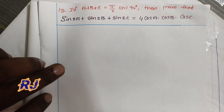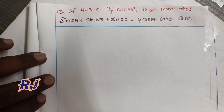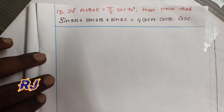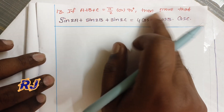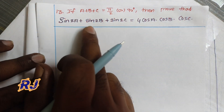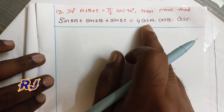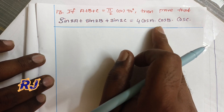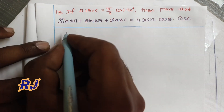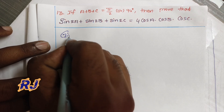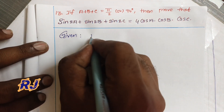Hi students, this is a transformations law problem. If a plus b plus c is equal to 90 degrees, then prove that sin 2a plus sin 2b plus sin 2c is equal to 4 cos a into cos b into cos c.